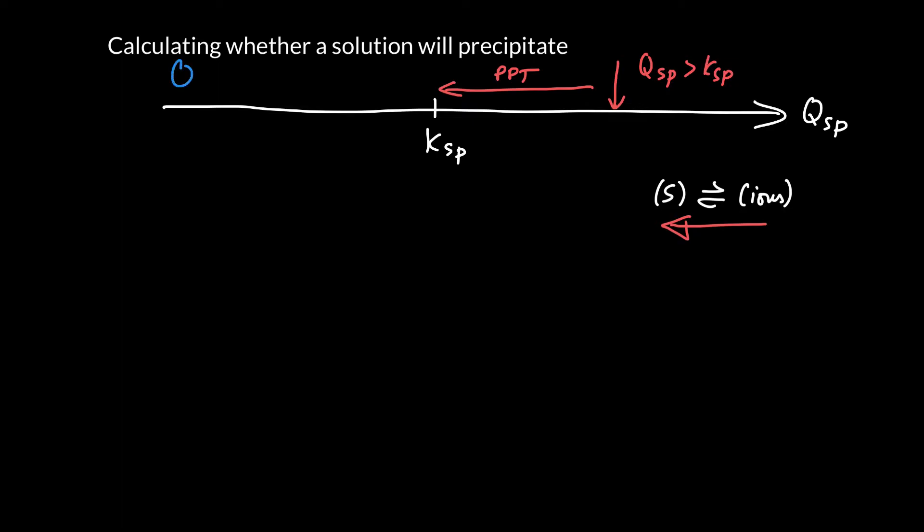Now conversely, if Q is smaller than K, it's not at equilibrium. So maybe you start off here. And so if you're not at equilibrium, you would like to reach equilibrium by increasing the value of Q. Now, how do you increase the value of Q? You have to form more ions.